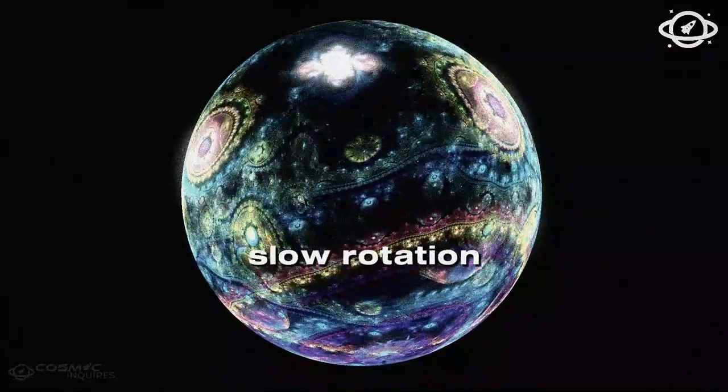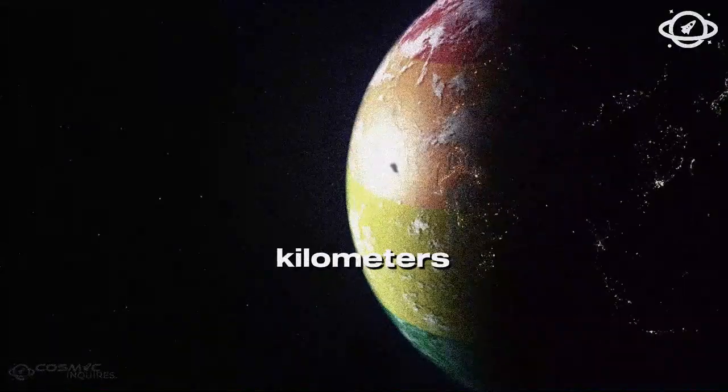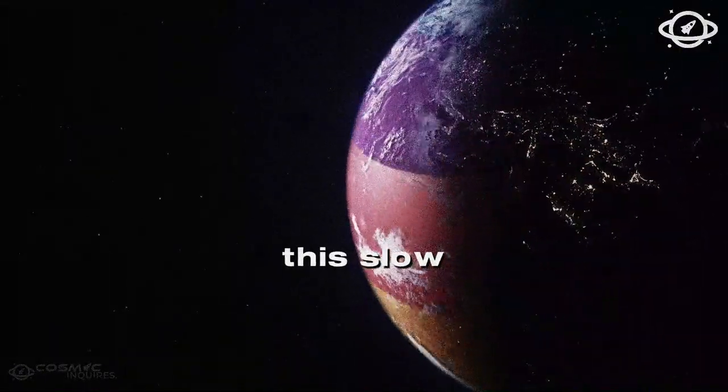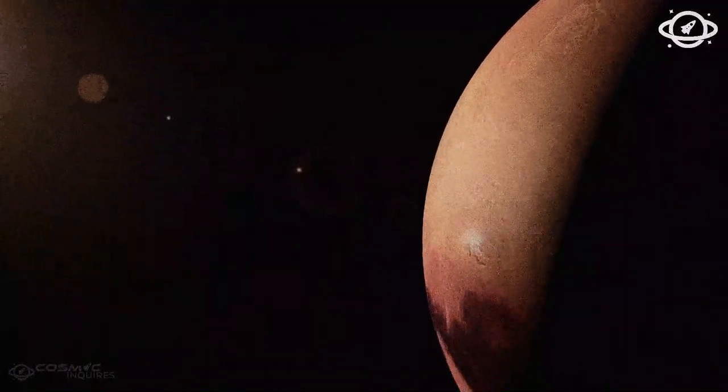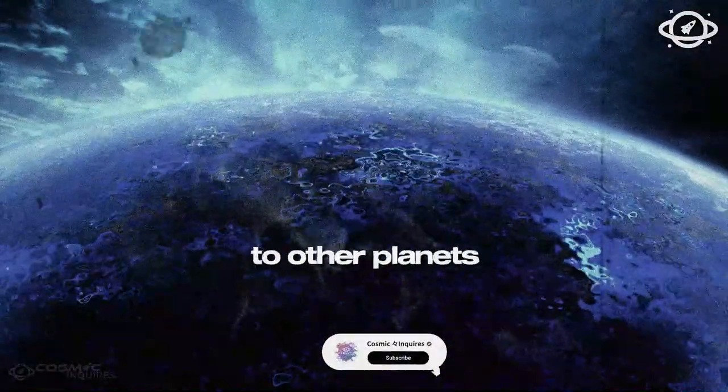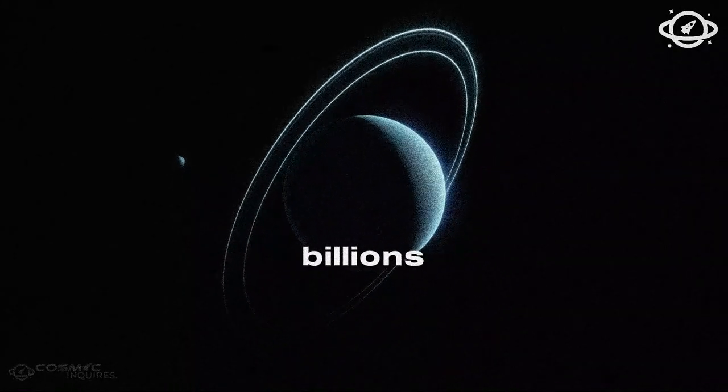To give you a sense of its slow rotation, at the equator, Venus rotates at a mere 6.5 kph. This slow spin makes Venus the second most spherical object in the solar system after the Sun. Why Venus rotates backward compared to other planets is still unclear, but it could be due to a massive impact billions of years ago, or perhaps tidal locking with the Sun.